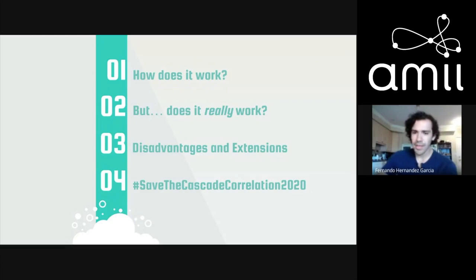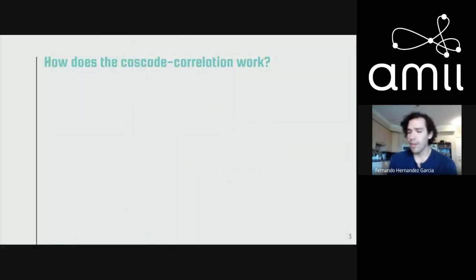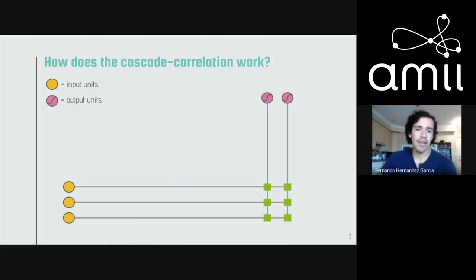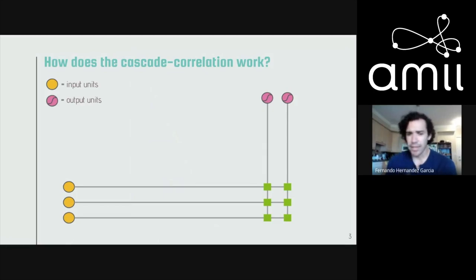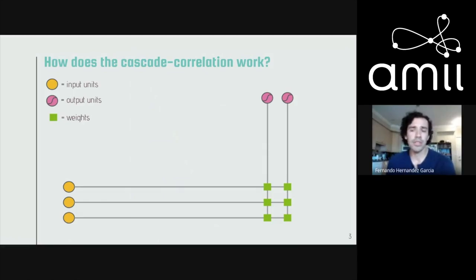To start, here's how it works. It's a constructive neural network, so it starts from the bottom up — it starts with just a set of inputs directly connected into the output units. These output units are predictions about some target of interest, for example the probability that it's going to rain today. The green squares represent the weights of the output layer, and we learn these weights by minimizing a loss function using gradient descent.